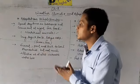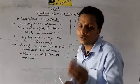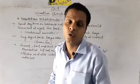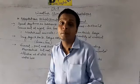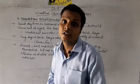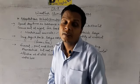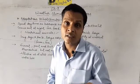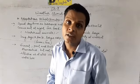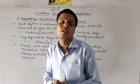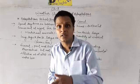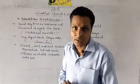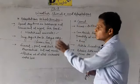Last class mein maine aapko bataya tha ki jo cold climates mein pae jaate hain animals, unke jo ears hote hain woh chote hote hain, small tail hote hain, chote pair hote hain. Iska matlab kya hota hai - woh heat loss reduce karne ke liye hote hain, taaki wahaan se heat loss na ho ya kam ho. Unke chote ears aur legs hote hain.